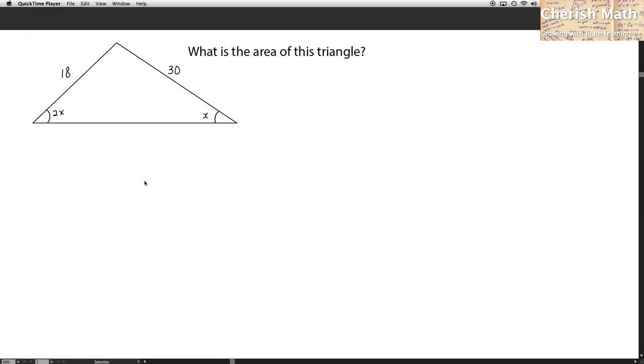What is the area of this triangle? Now the information provided here is 2x for the angle, while the other angle is x. One of the sides is 18 units, while the other one is 30 units.